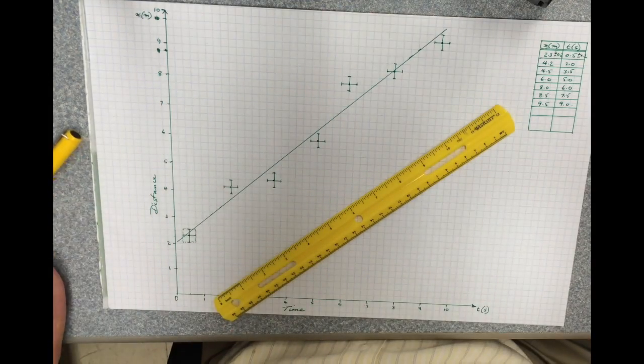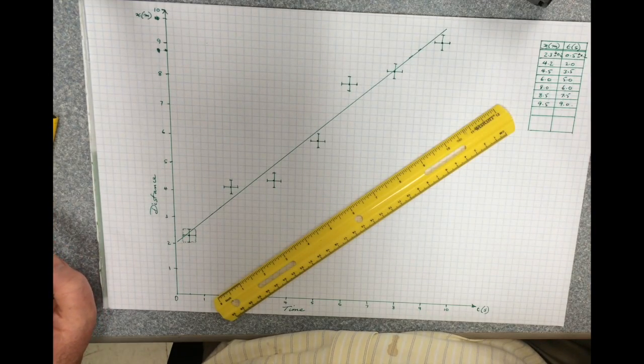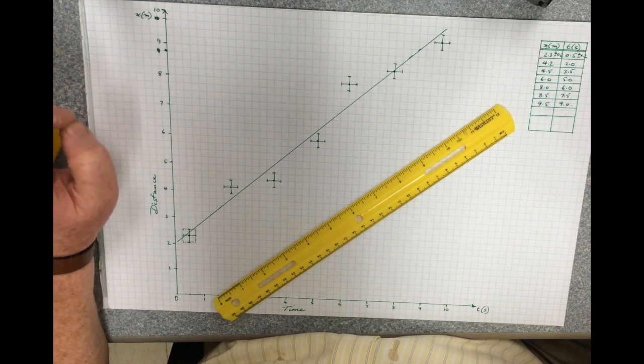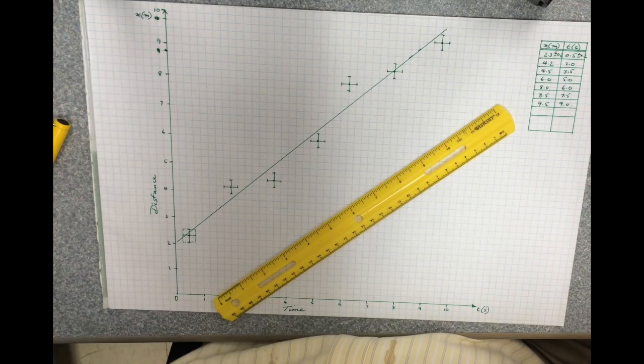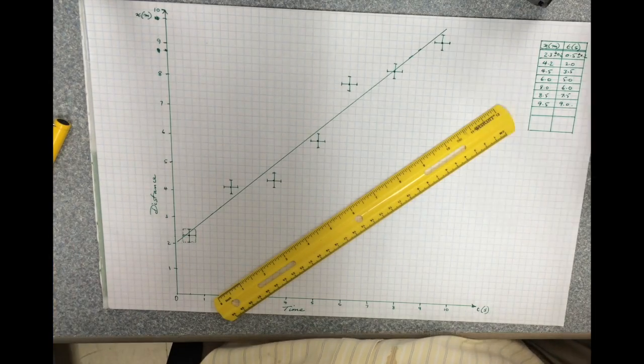Now, often in physics, the slope of the line is what I'm trying to determine. In this case, it would be distance versus time, which would be speed or velocity, and I need to know the uncertainty in the velocity.